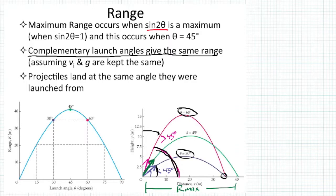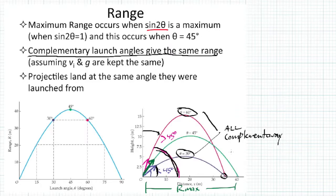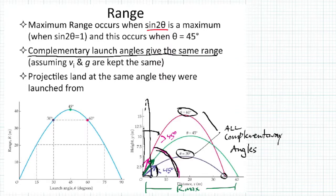Both the 30-degree and 60-degree launches come back down at exactly the same point — they return the same range. Meanwhile, 45 degrees gives the maximum range. This applies to all complementary angles: even 1 degree and 89 degrees — one flies nearly flat, the other shoots nearly straight up — but both land at the same distance.